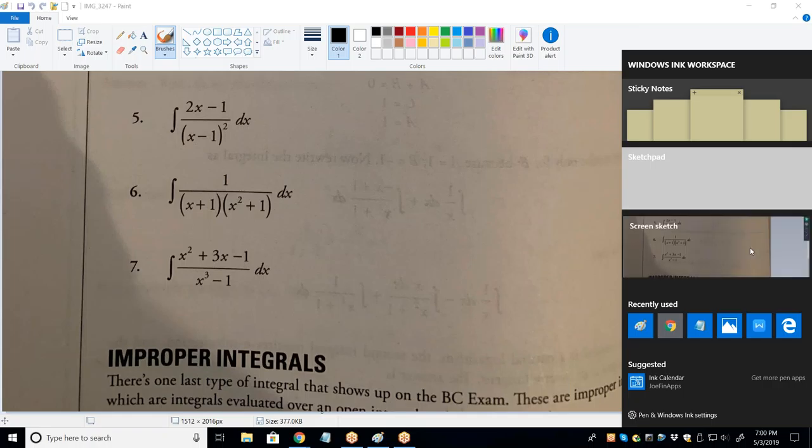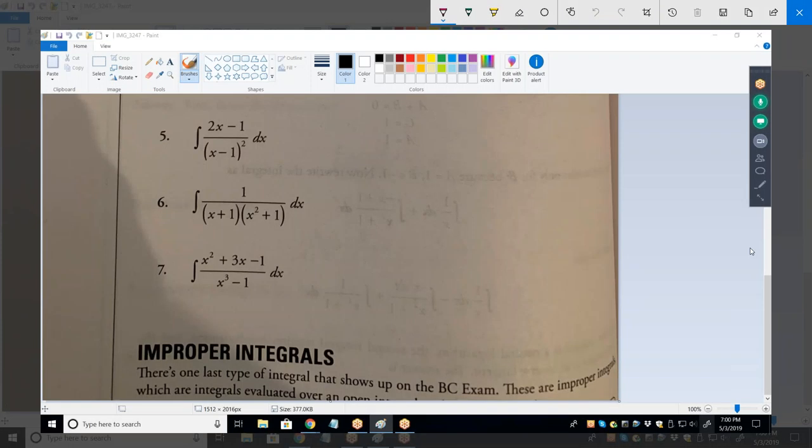We need to factor that denominator. Okay. So, factoring it by the difference of perfect cubes. In other words, when you factor the difference of perfect cubes, what you get is that times...